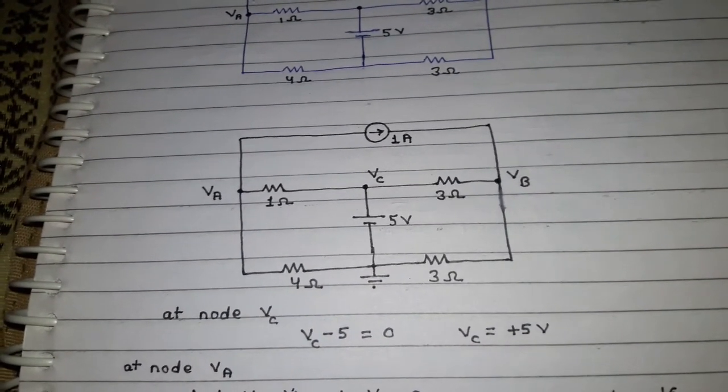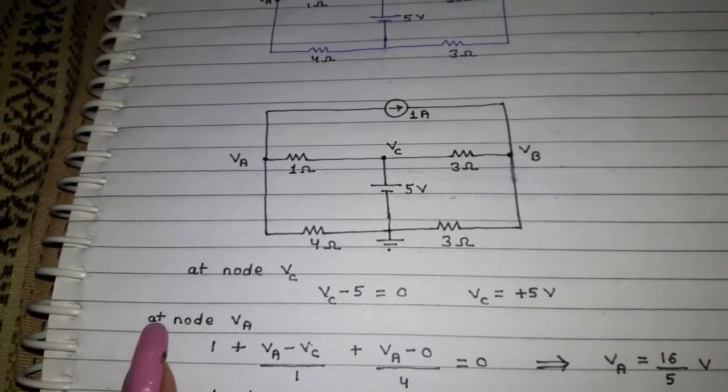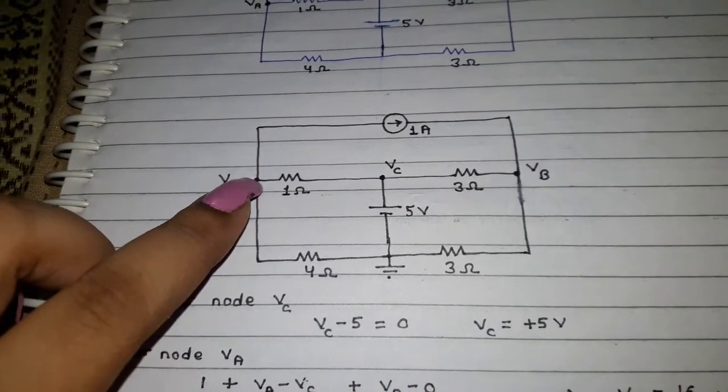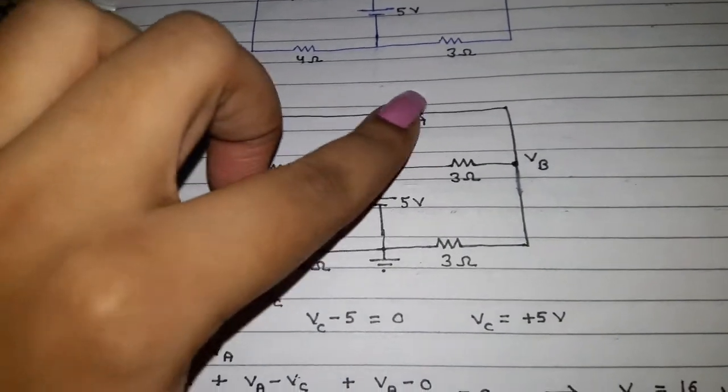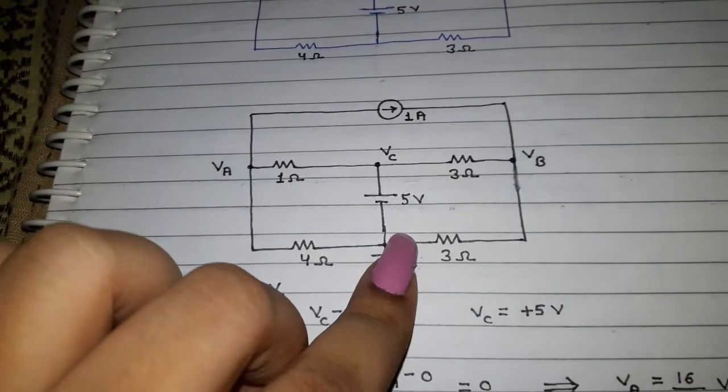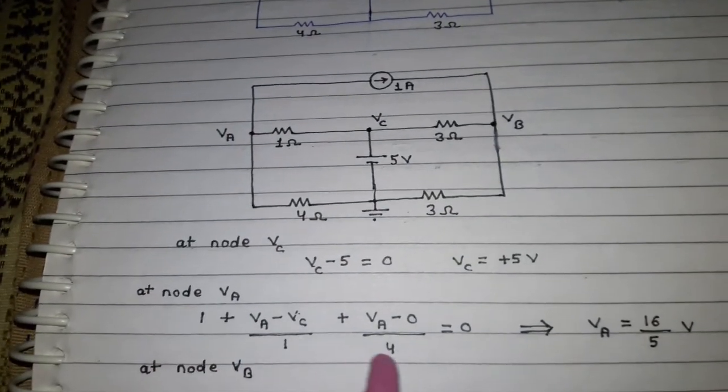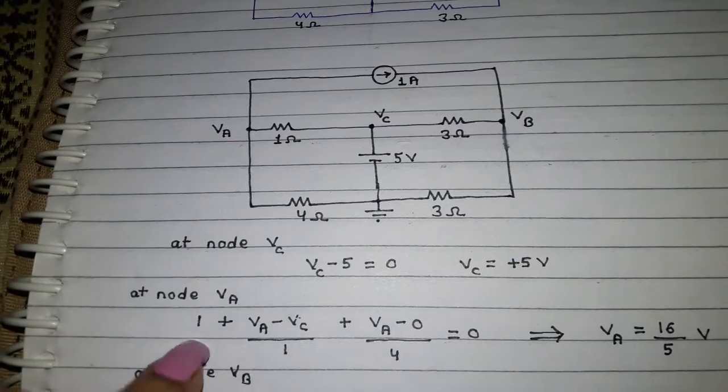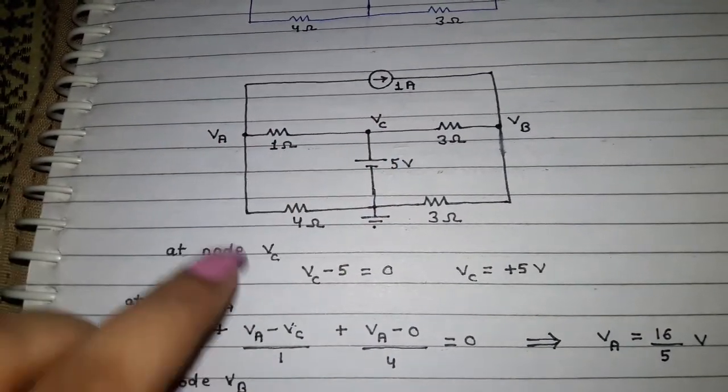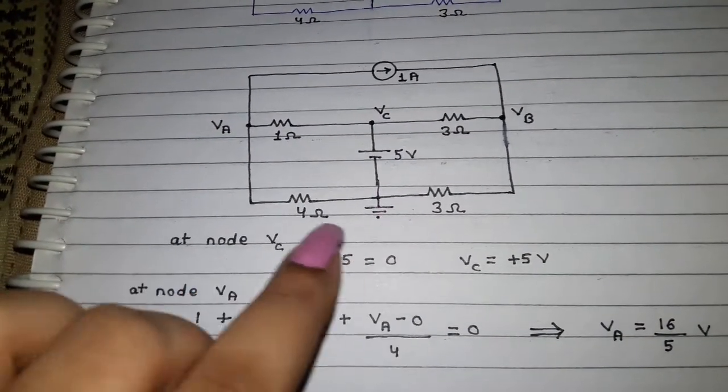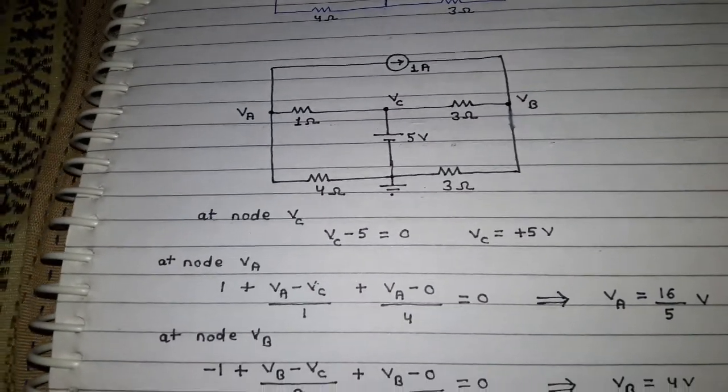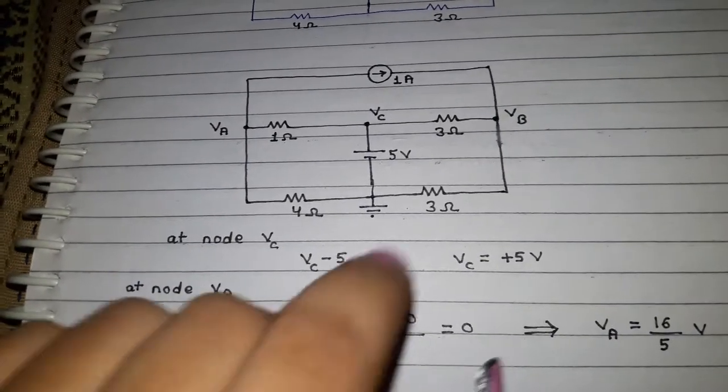Now your reference node changes. Now your reference node is VA. You are taking this as the reference node and applying nodal analysis in this way. So you get these equations. Here you have current, so you write 1, then voltage minus voltage upon R, then voltage minus 0 upon R. You get this equation and the value of VA comes out.